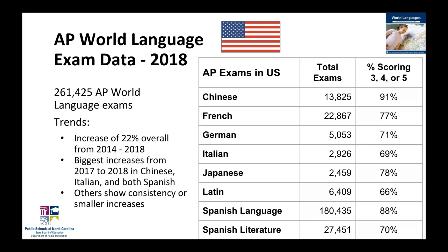Nationally, the biggest increases from 2017 to 2018 were in Chinese, Italian, and both Spanish exams. The other languages show consistency or smaller increases. There are eight different AP world language exams — seven different languages, because Spanish has both a Spanish Language and Culture exam and a Spanish Literature and Culture exam. Notice this slide is set up so you can repurpose it. One suggestion when looking at data: pick a language to follow through these slides so you can look at each thing from the perspective of one particular language or exam.